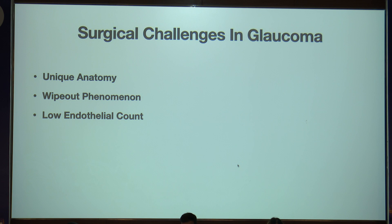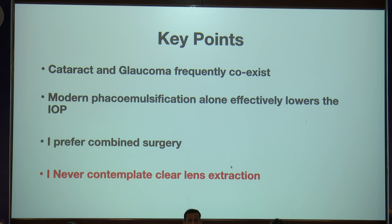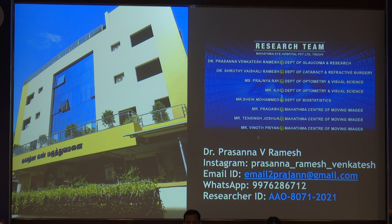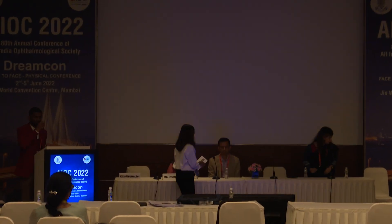Surgical challenges in glaucoma are unique because of its unique anatomy. Advanced patients can go into a wipeout phenomenon, and low endothelial cell count must be kept in mind for combined surgery. Key points: cataract and glaucoma frequently coexist; modern phacoemulsification alone effectively lowers IOP. I always prefer combined surgery when there is glaucoma with a cataract component, though I personally never contemplate clear lens extraction — if it's only a cataract, please do contemplate that. Thank you.